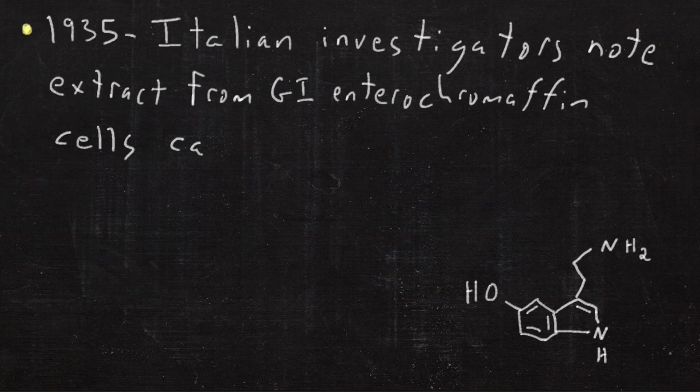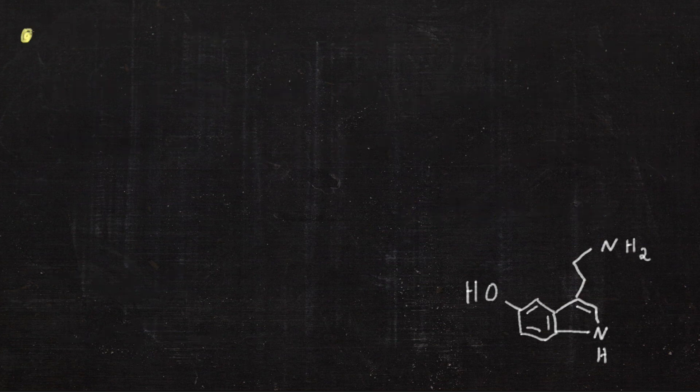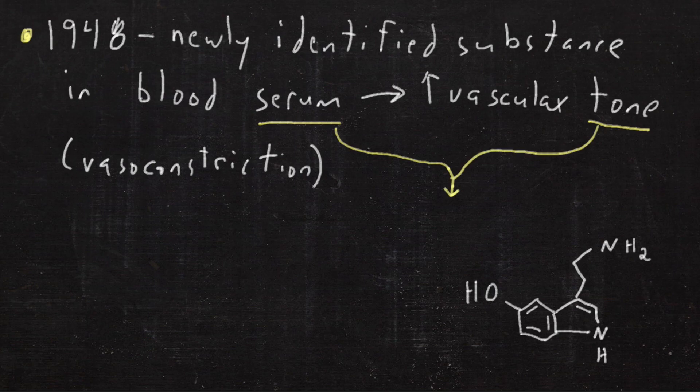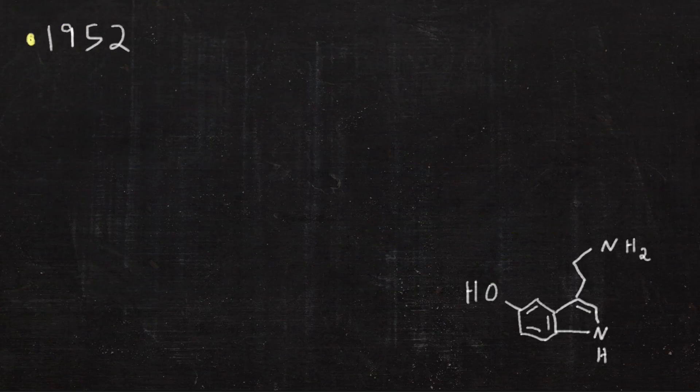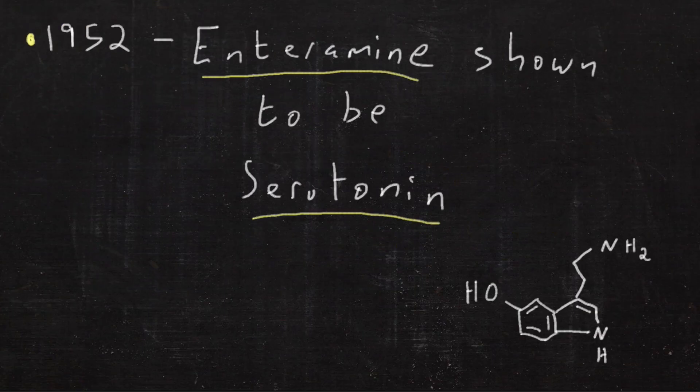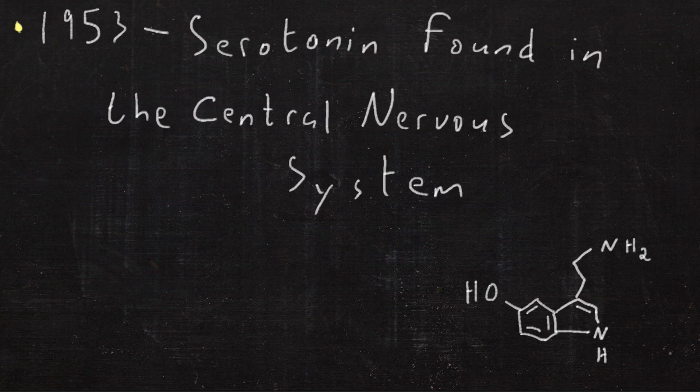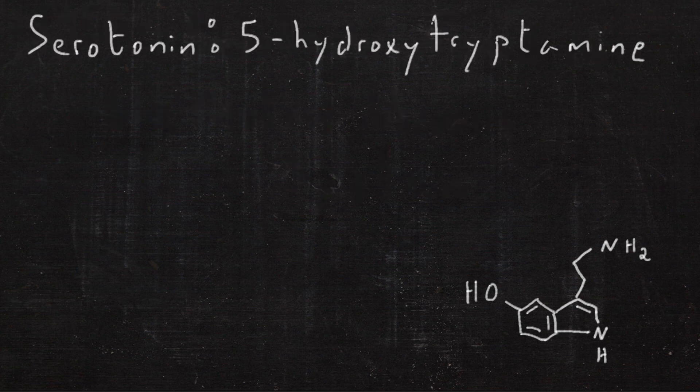It was discovered in 1935 in an extract from GI enterochromaffin cells and labeled enteramine. In 1948, a substance in the blood serum called serotonin increased vascular tone. And in 1952, these were shown to be the same thing. By 1953, it was found in the central nervous system.